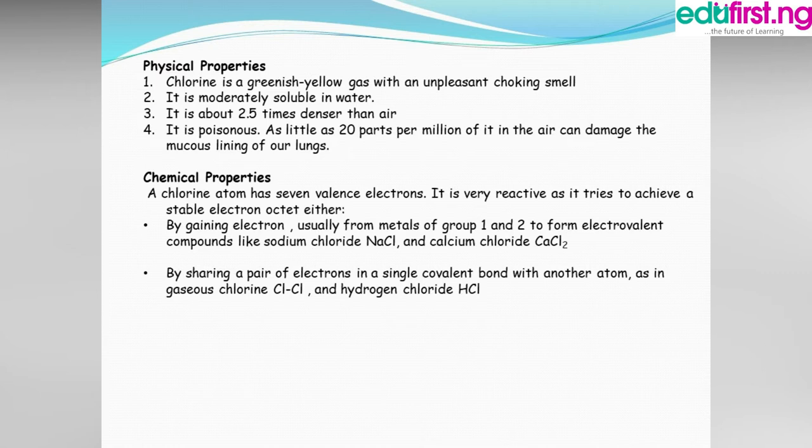Chemical properties: The chlorine atom has seven valence electrons, so it is very reactive as it needs just one more electron to achieve a stable electron octet. It does this by gaining electrons, usually from metals of group 1 and 2, to form electrovalent compounds such as sodium chloride and calcium chloride, and also by sharing a pair of electrons in a single covalent bond with another atom, as in hydrogen chloride gas.